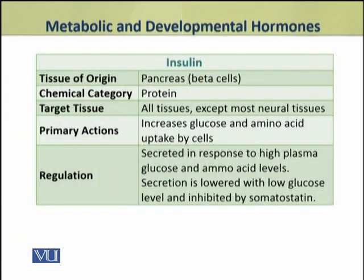We shall summarize them. First, insulin, which is produced by the beta cells of the pancreas. It is a protein hormone and it targets almost all tissues of the body except the neural tissues. Its primary action is to increase the uptake of glucose and amino acids by the cells, and it is stimulated by high plasma glucose and amino acid levels.